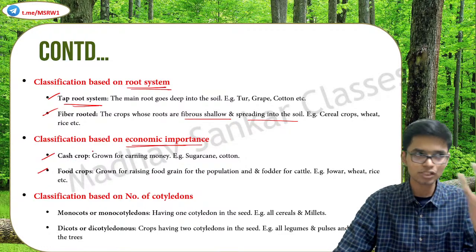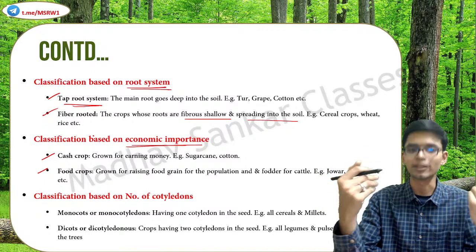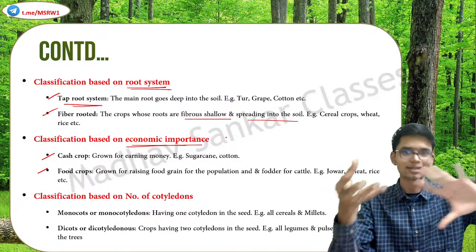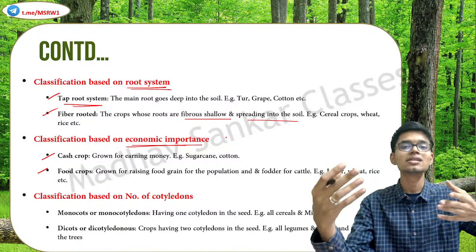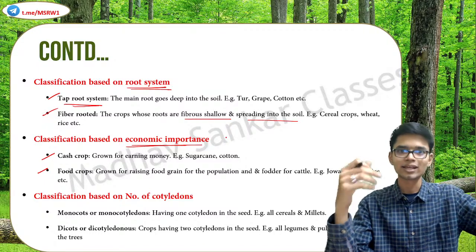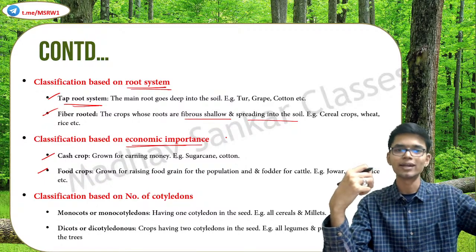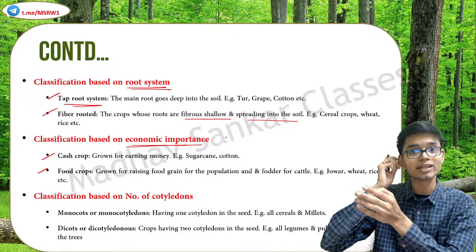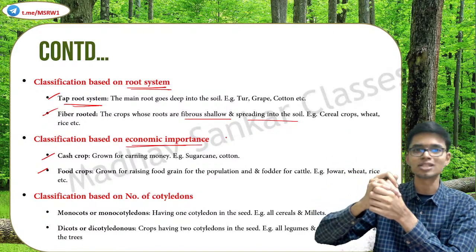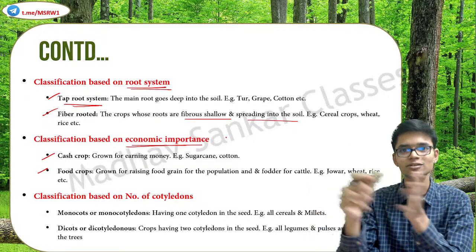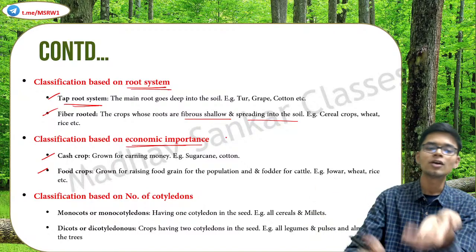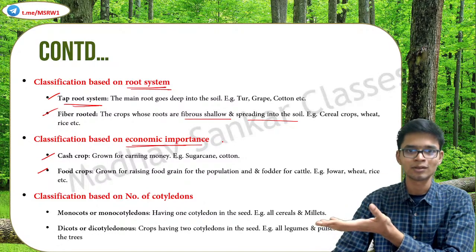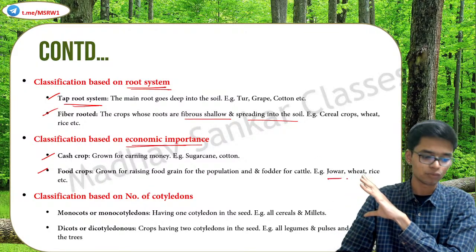Classification based on economic importance: Cash crops are targeted for commercial purposes to earn more money — examples include sugarcane and cotton. Cotton has the entire textile sector associated with it; sugarcane has the sugar industry, and bagasse from sugarcane can be used for ethanol making. Indigo was another cash crop that the British forced Indians to cultivate. Food crops are grown for the purpose of food — not just for human beings but also as fodder for cattle. Examples include jowar, wheat, and rice.